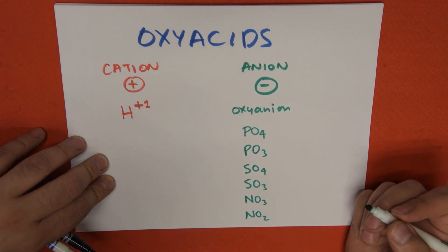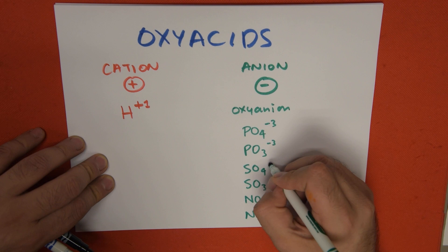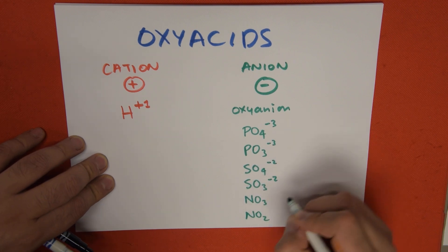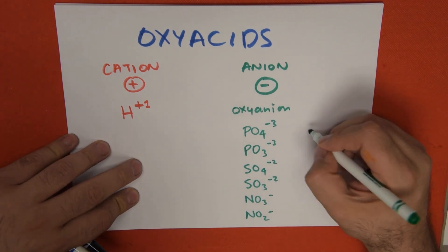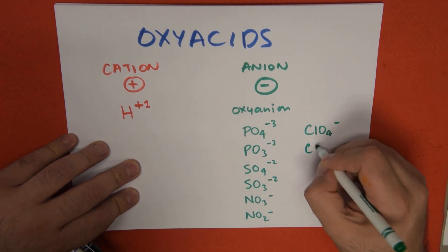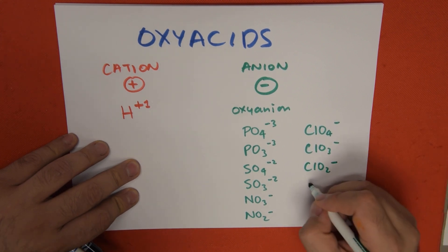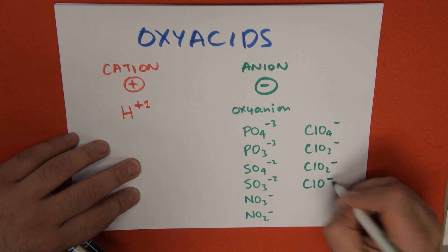Each one of these has a different negative charge. Phosphate or phosphorus compounds are -3, sulfur are -2, and nitrogen are -1. And of course our halogen compounds like perchlorate -1, chlorate -1, chlorite -1, and hypochlorite with one oxygen atom -1.